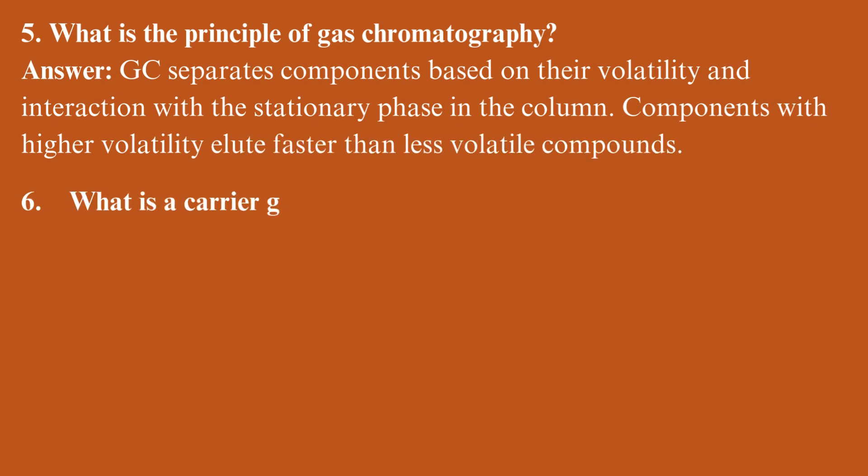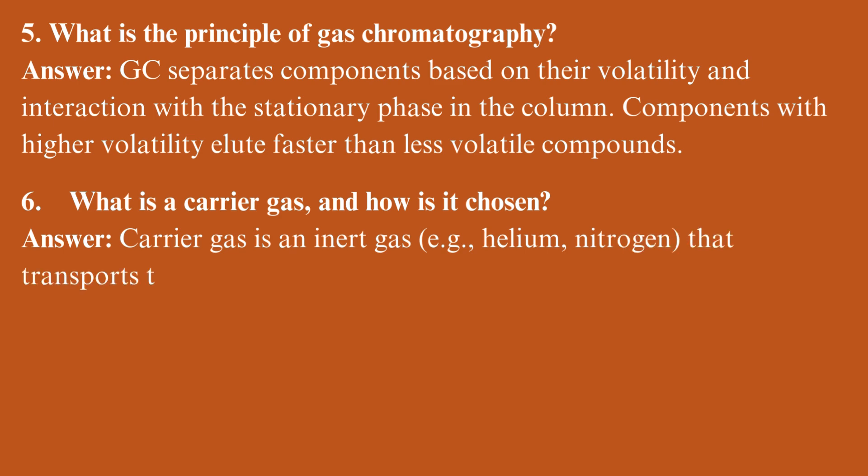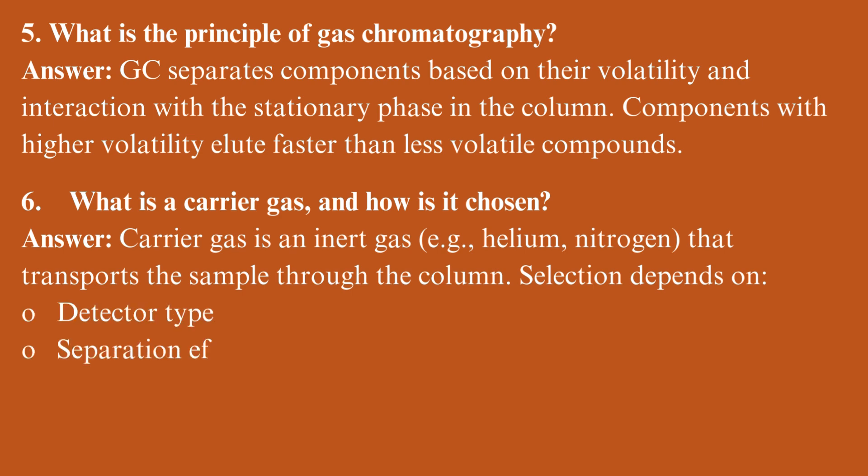What is a carrier gas, and how is it chosen? Carrier gas is an inert gas, example helium or nitrogen, that transports the sample through the column. Selection depends on detector type, separation efficiency, and compatibility with the sample.